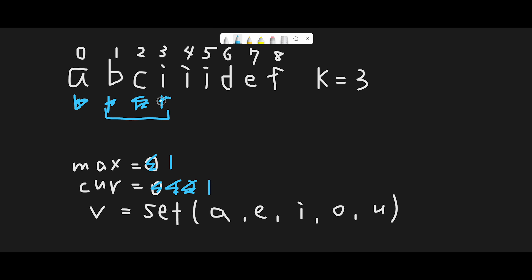Moving next, we find another 'i' which is in the vowels set, so we add plus one to current_vowels, making it 2. The condition right >= k is now always met. We compute right minus k — four minus one is 1 — and look at index 1 which is 'b'. Since 'b' is not in the vowels set, we don't subtract from current_vowels. Index 1 is out of bounds but since 'b' is not a vowel, we don't do anything.